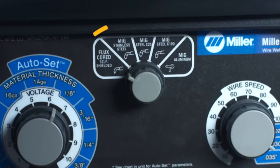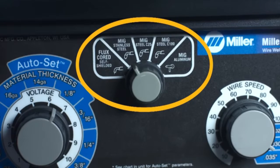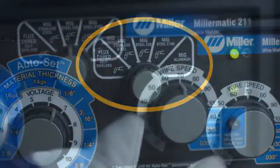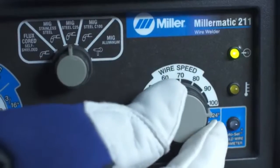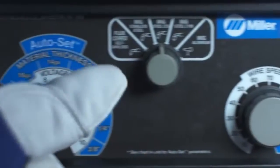The Millermatic 211 features advanced Auto Set, which works with five different wire types and gas combinations. First, select your material type and gas. Then select wire diameter and choose your material thickness.